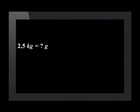Remember that we also divide by one thousand if we convert from kilograms into tons. What happens if we want to convert something from kilograms into grams? Let's convert 2.5 kilograms into grams. As a kilogram equals one thousand grams, we need to multiply 2.5 kilograms by one thousand. The answer is two thousand five hundred grams.